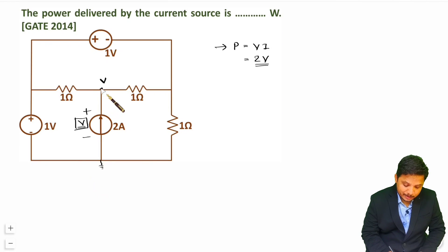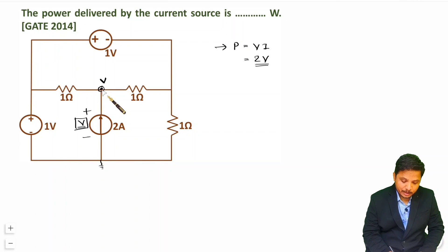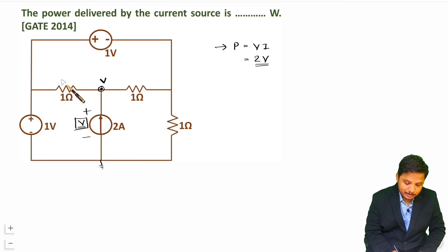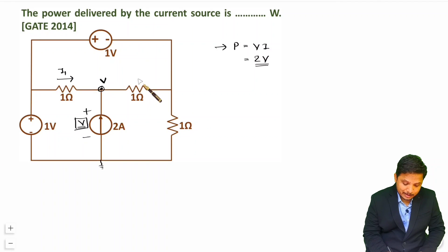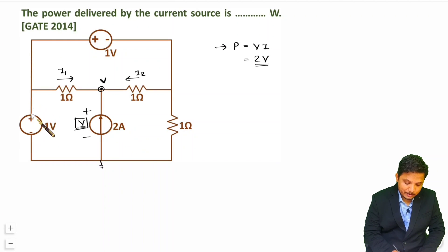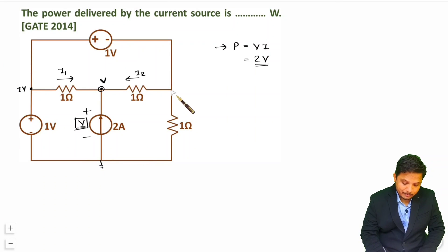To identify the value of V, we apply nodal analysis at this node. First I will consider current directions — let us call them I1 and I2. There is already a 2 ampere current source present. As per the circuit, one voltage with respect to ground is 1 volt, and there is an unknown voltage which I will call V dash.